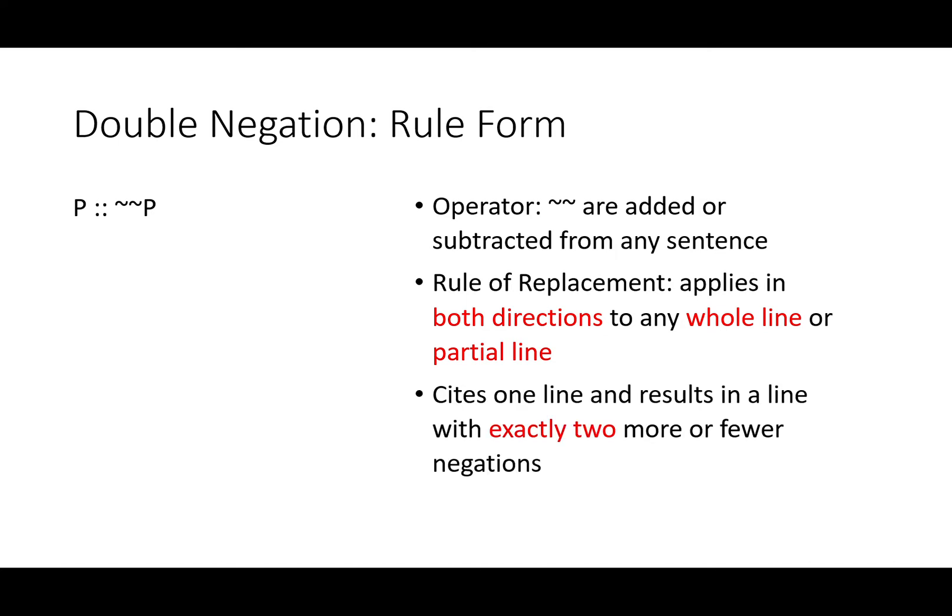We cite exactly one line, and we result in a line with exactly two more or fewer negations.